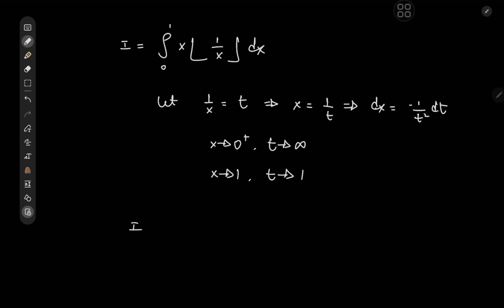So that means I transforms into the integral from infinity to 1 of 1 over t times floor of t times negative 1 over t squared dt. And of course I can switch up the order of the limits of integration to introduce another negative sign that cancels out with the one we already have. So we have the integral from 1 to infinity of floor of t divided by t cubed dt.